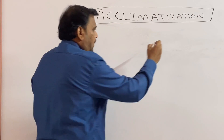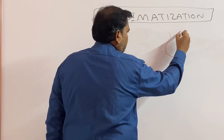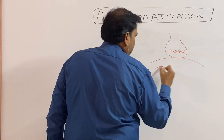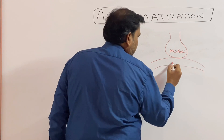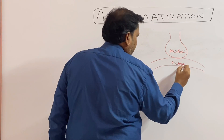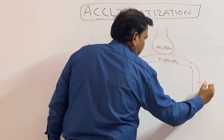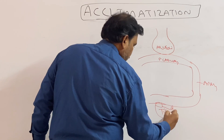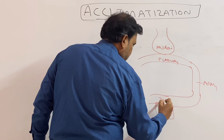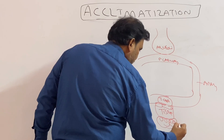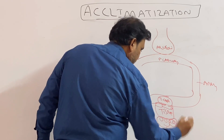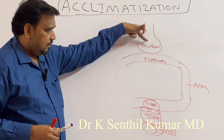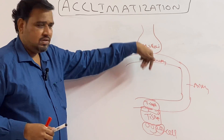To understand what changes take place, I will draw the diagram of transport of oxygen. This is your alveolus and this is the pulmonary capillary. This is the artery, this is the tissue, and this is the tissue capillary. This will be the cell. The oxygen enters into the pulmonary capillary where gas exchange takes place.